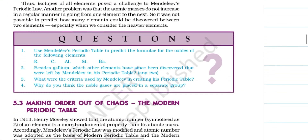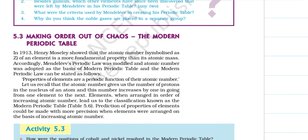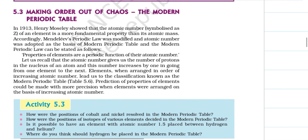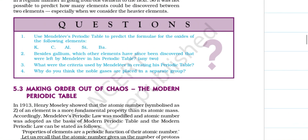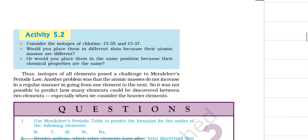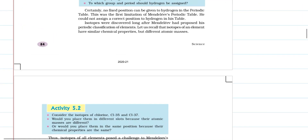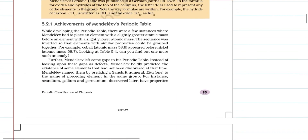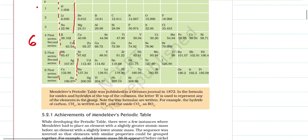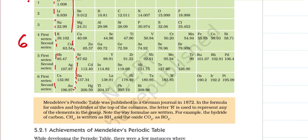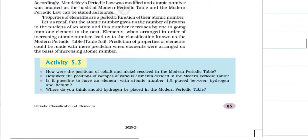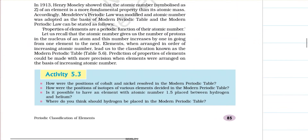These limitations were overcome by the modern periodic table, which gives the final classification of elements. The modern periodic table is very similar to Mendeleev's periodic table, with only a few variations. In the next session we will be studying about the modern periodic table. Thank you.